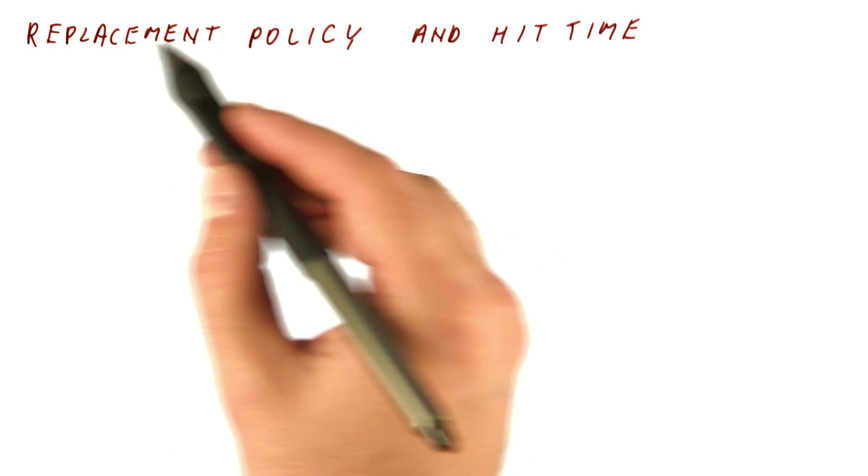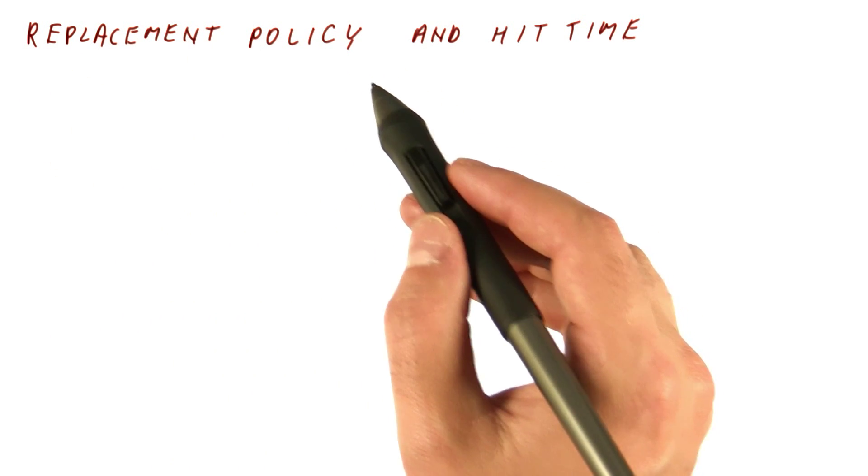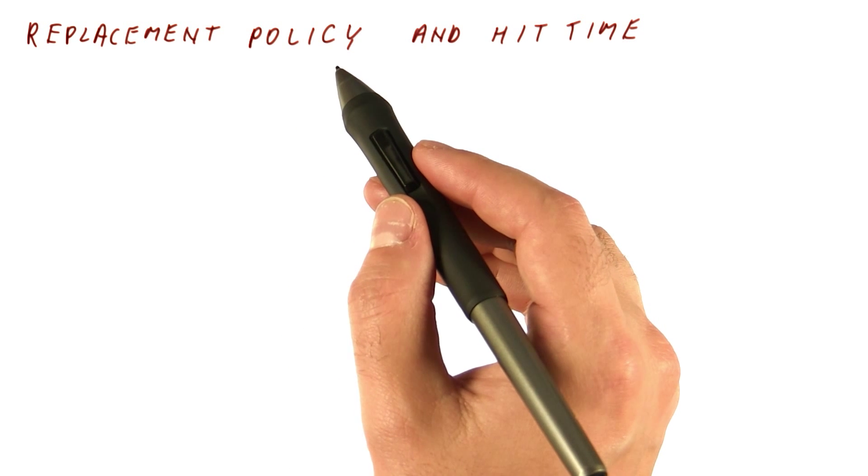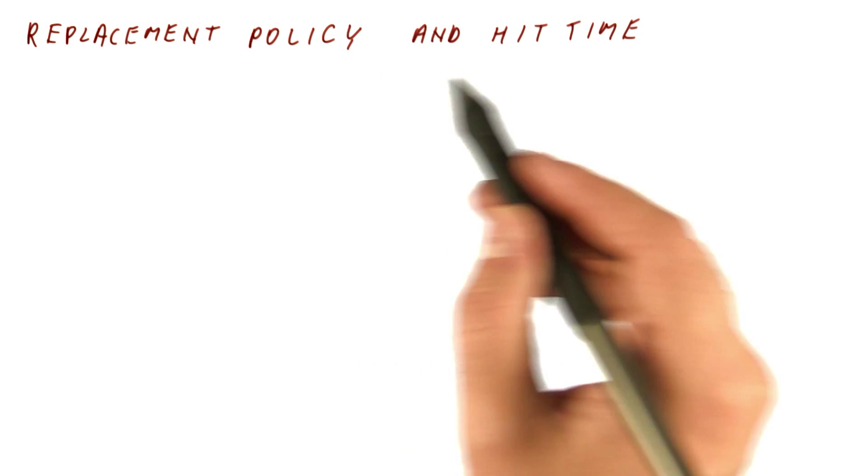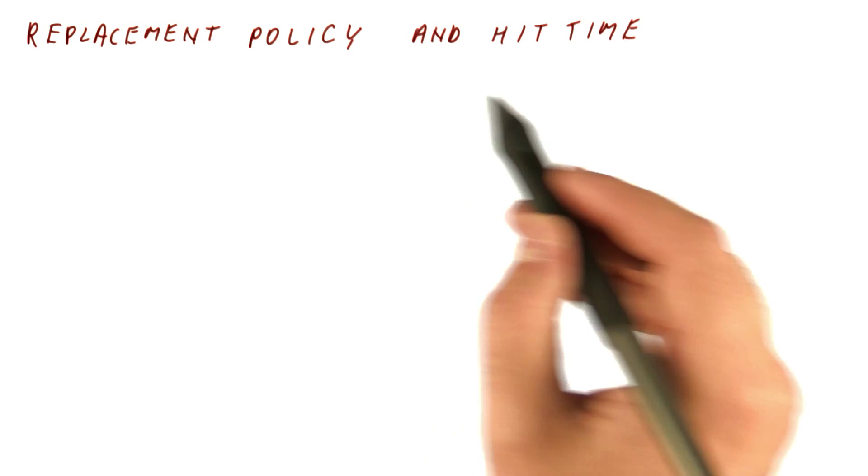Next, we will look at how the replacement policy for the cache, which chooses, if you remember, which block to kick out when we need more room, interacts with the hit time of the cache.